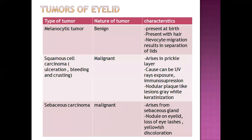Tumors of the eyelid include three kinds: melanocytic tumor, squamous cell carcinoma, and sebaceous carcinoma. Melanocytic tumor is benign, whereas squamous cell carcinoma and sebaceous carcinoma are malignant. Melanocytic tumor can be present at birth with hair, and is due to nevocyte migration resulting in separation of the lids. Squamous cell carcinoma is characterized by ulceration, bleeding, and crusting; it arises in the prickle cell layer and can be caused by UV exposure or immunosuppression. Nodular flake-like lesions become grey-white due to keratinization.